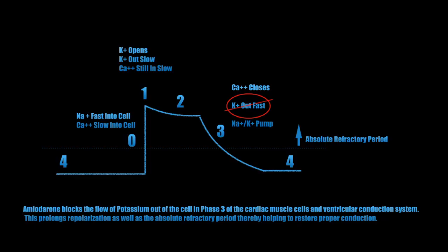So how does it help us in these situations? To answer that, we have to look back at our cardiac action potential. Remember that we said the primary mechanism of action for amiodarone was blocking the potassium channels. In our fast action potentials — those involving the cardiac muscle tissue and the ventricular conduction system —